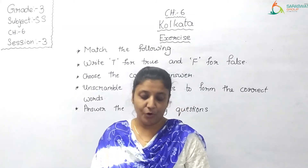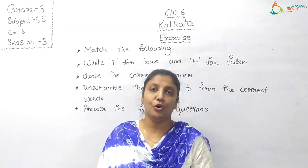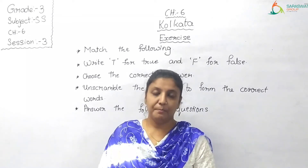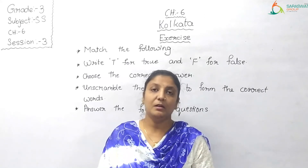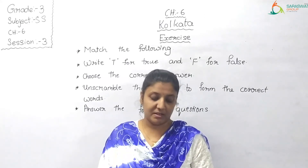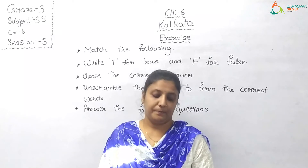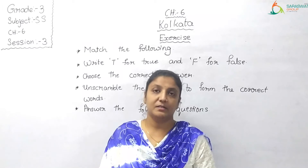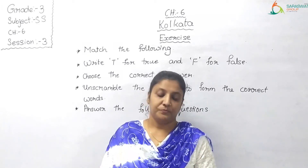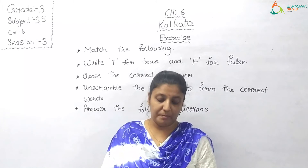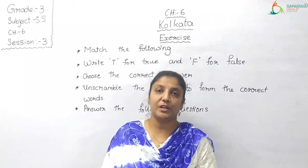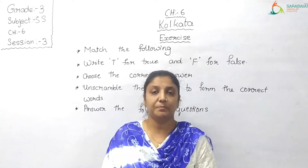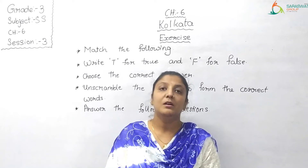Next, Column A, option C: Fort William — match it with Column B, option number 1: Built by the British. So match C with 1. Next, Column A, option D: Botanical Gardens — match it with Column B, option number 5: Great Banyan Tree. So match D with 5.